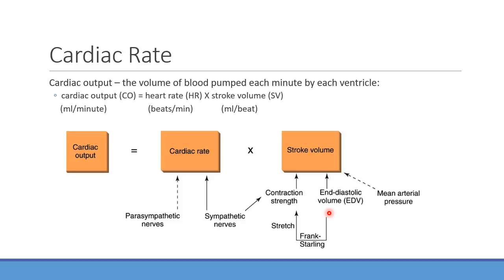The other determinant of stroke volume is resistance — what the blood is pumping against. Mean arterial pressure (one-third systolic plus two-thirds diastolic) represents what we're pumping against. Higher pressure impedes flow, like putting a kink in a hose, so stroke volume tends to go down. This is a big factor in chronic diseases like congestive heart failure, where too much pressure in the arterial system is the main driver.